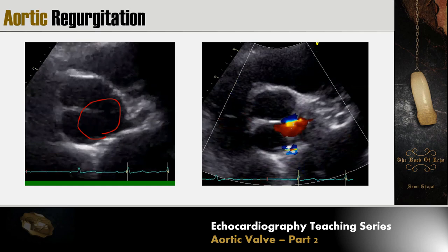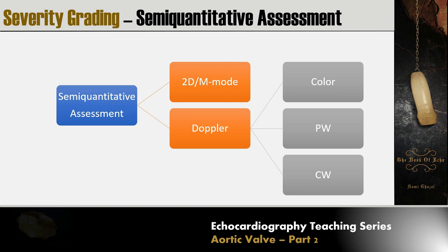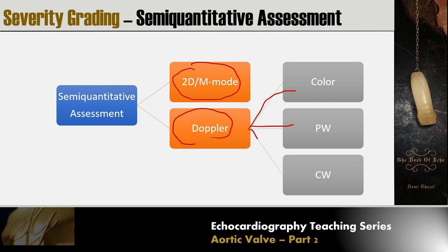Now we proceed to severity grading. We can do semi-quantitative or quantitative assessment. In semi-quantitative assessment, we use 2D and M-mode, as well as Doppler — which includes color Doppler, PW Doppler, and continuous wave Doppler. We will now see how each is used to semi-quantitatively assess aortic regurgitation.